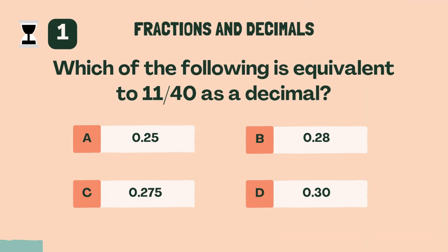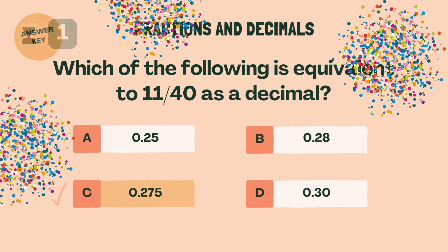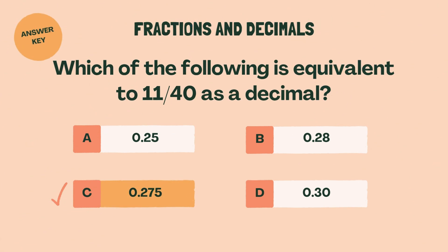Which of the following is equivalent to 11 fortieths as a decimal? C, 0.275.